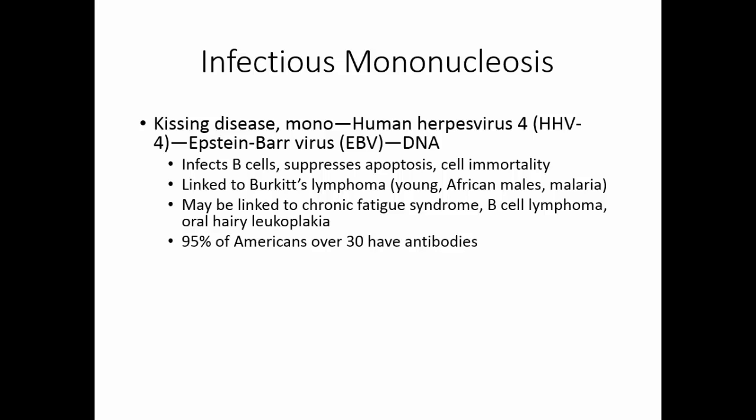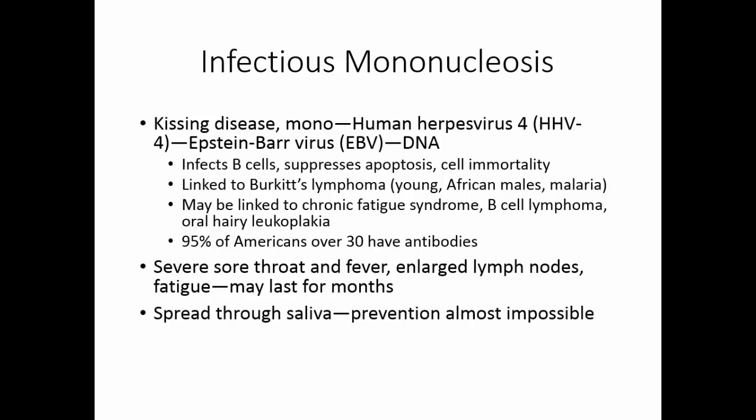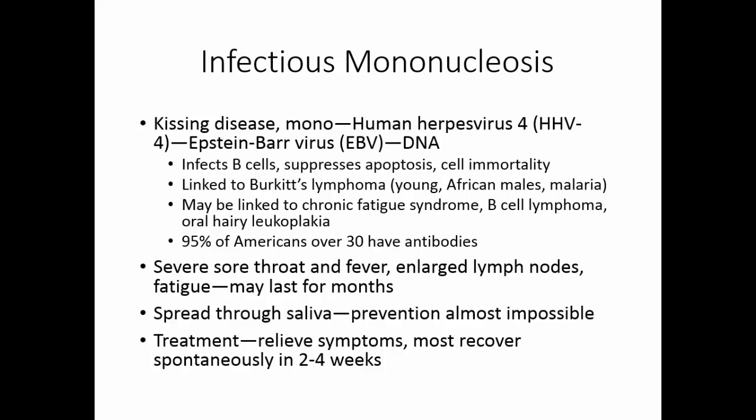About 95% of Americans over the age of 30 have antibodies to Epstein-Barr virus, even though they may not have had the disease. The disease presents with a severe sore throat and fever, enlarged lymph nodes, and fatigue that may last for months. This is spread through saliva, so prevention is almost impossible. Treatment is primarily to relieve symptoms; since this is a viral disease, antibiotics don't work. Most people recover from the majority of symptoms within two to four weeks, but fatigue may persist for several weeks.